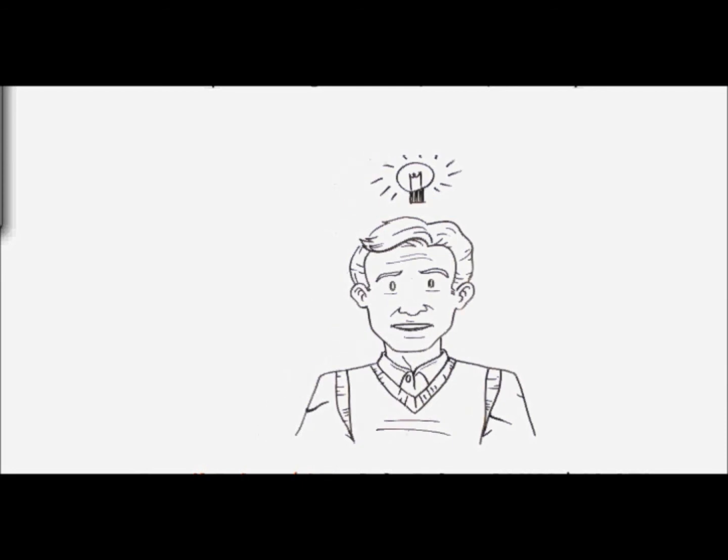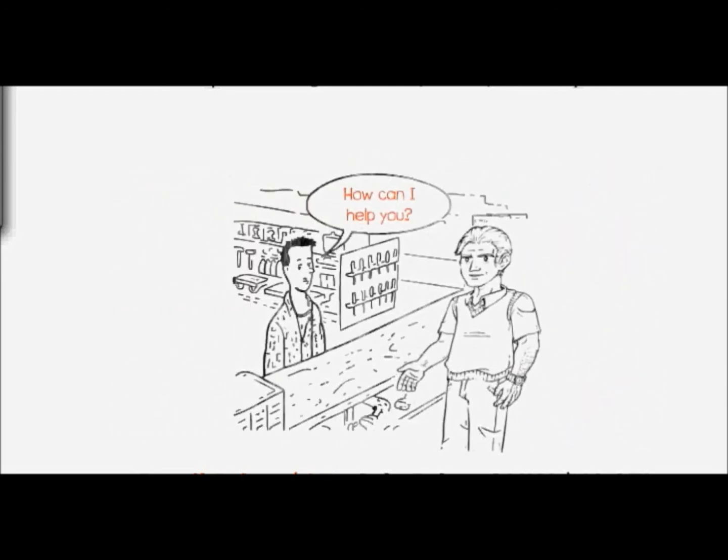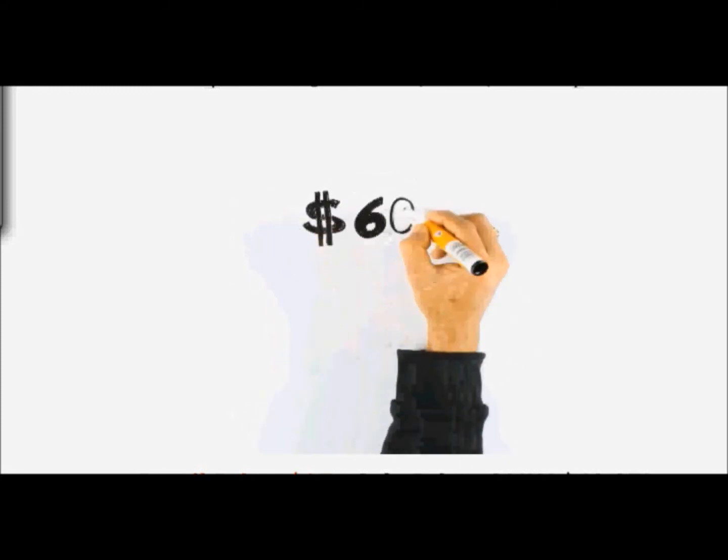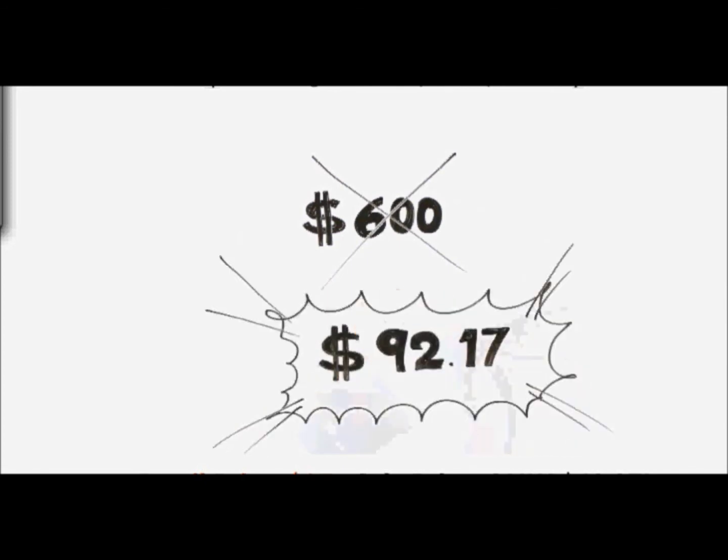The very next weekend, I went to the store and bought all the stuff I knew I'd need to create the kind of high-efficiency solar panels I wanted for my home. And even though the kits were priced at $600 or more, I managed to get everything I needed for just $92.17.